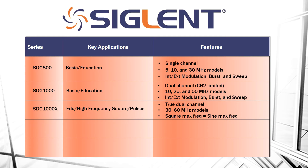Some other features of the SDG 1000X: EasyPulse technology provides low jitter and better rise and fall time. It also has a LAN remote communication input as well as a USB input. Channel tracking and coupling lets you link output phase, frequency, and amplitude, such that any change from one channel — that delta will be applied to the other channel, which can be helpful if you're going to be doing simultaneous sourcing on both channels at the same time.